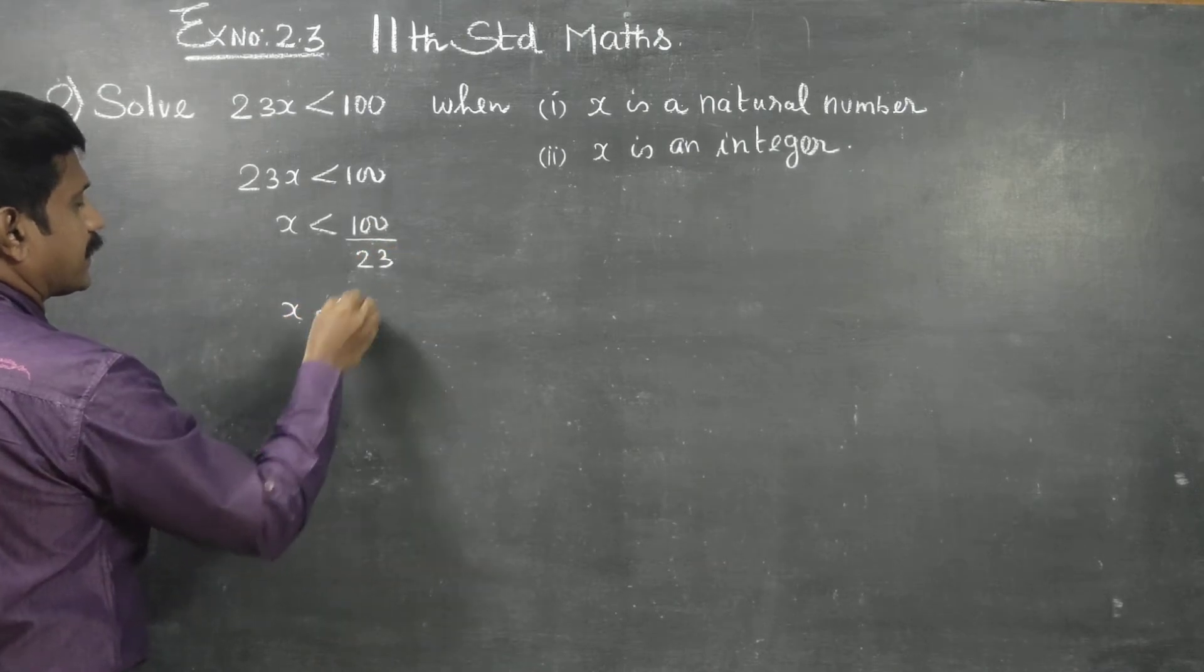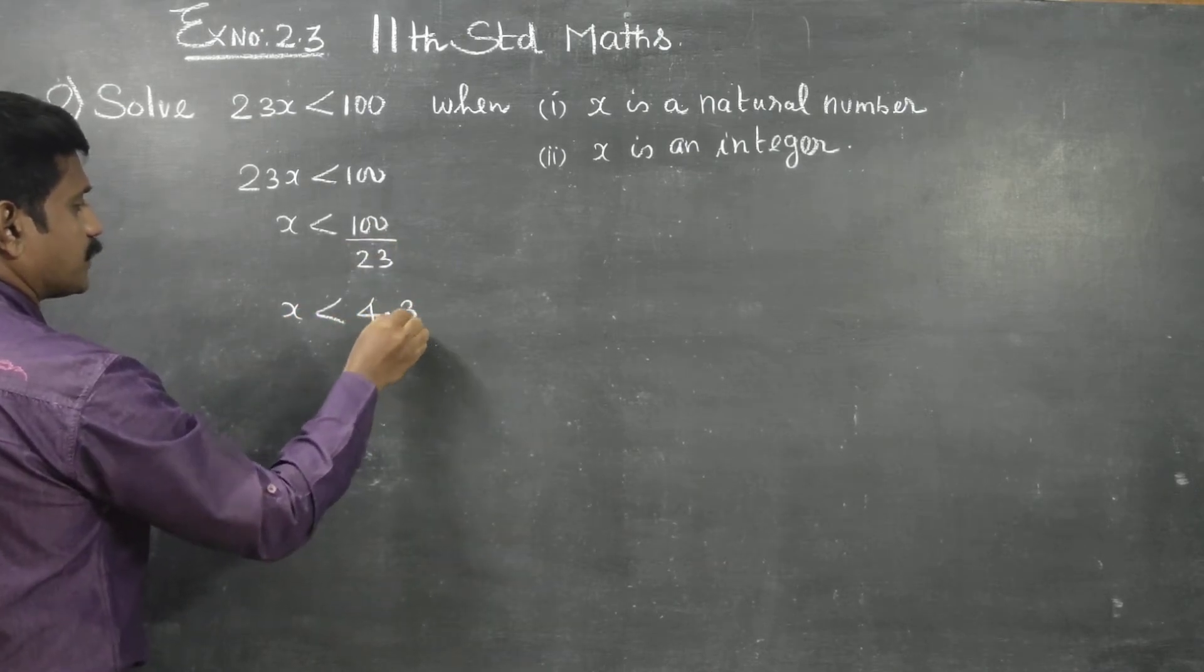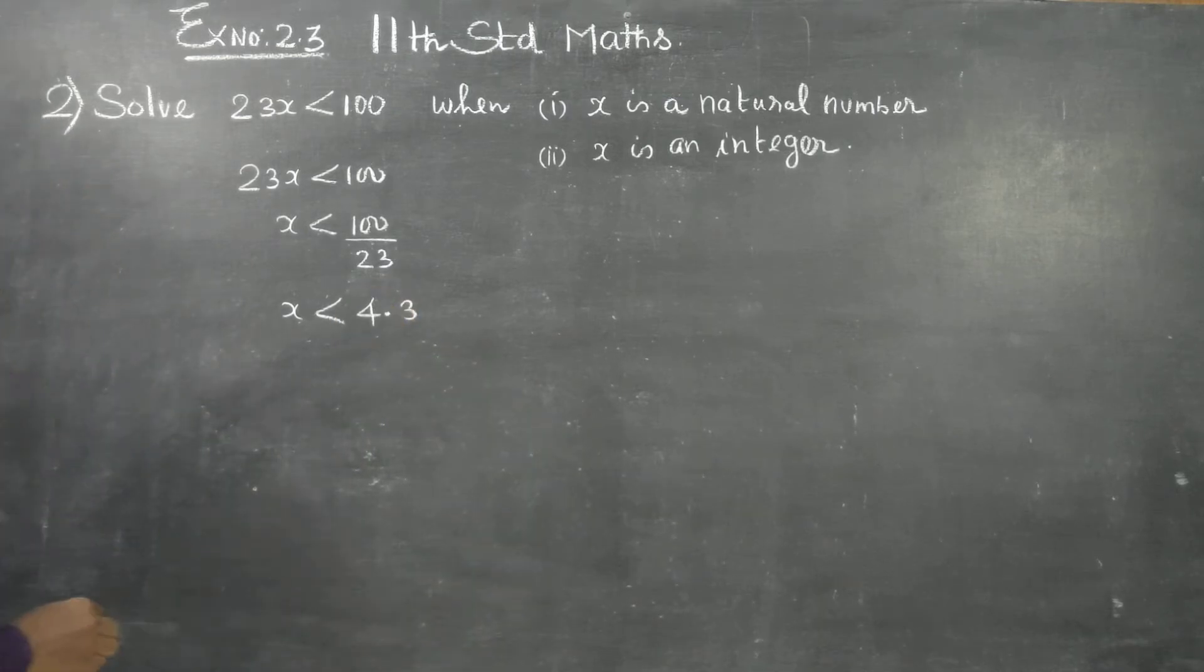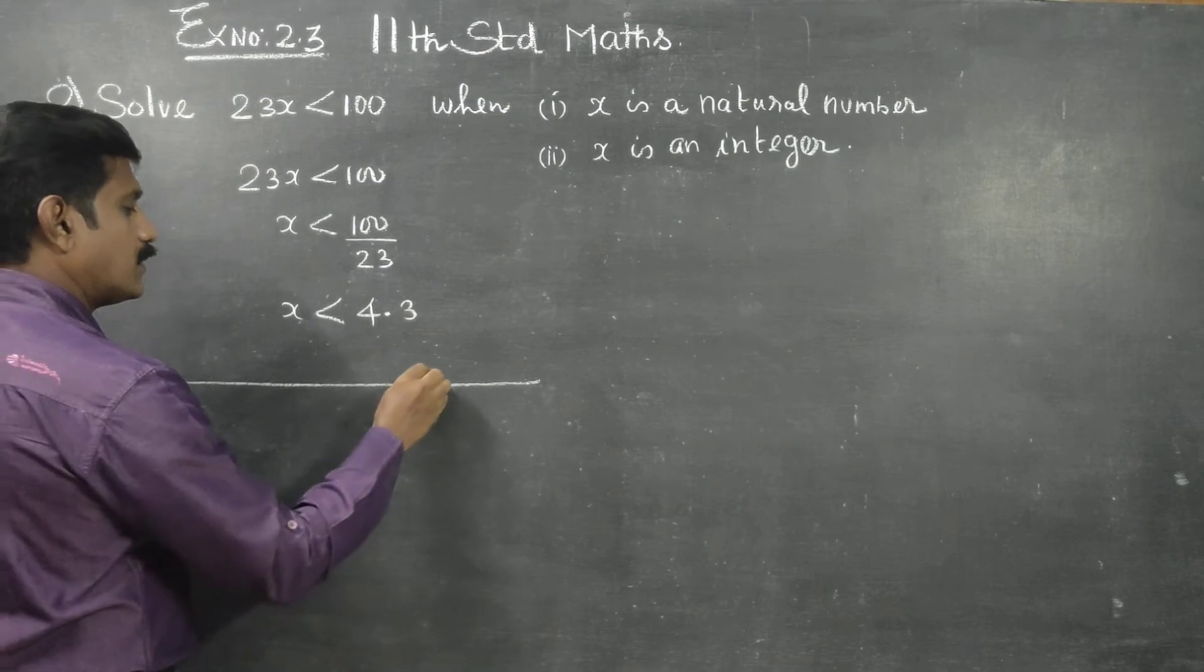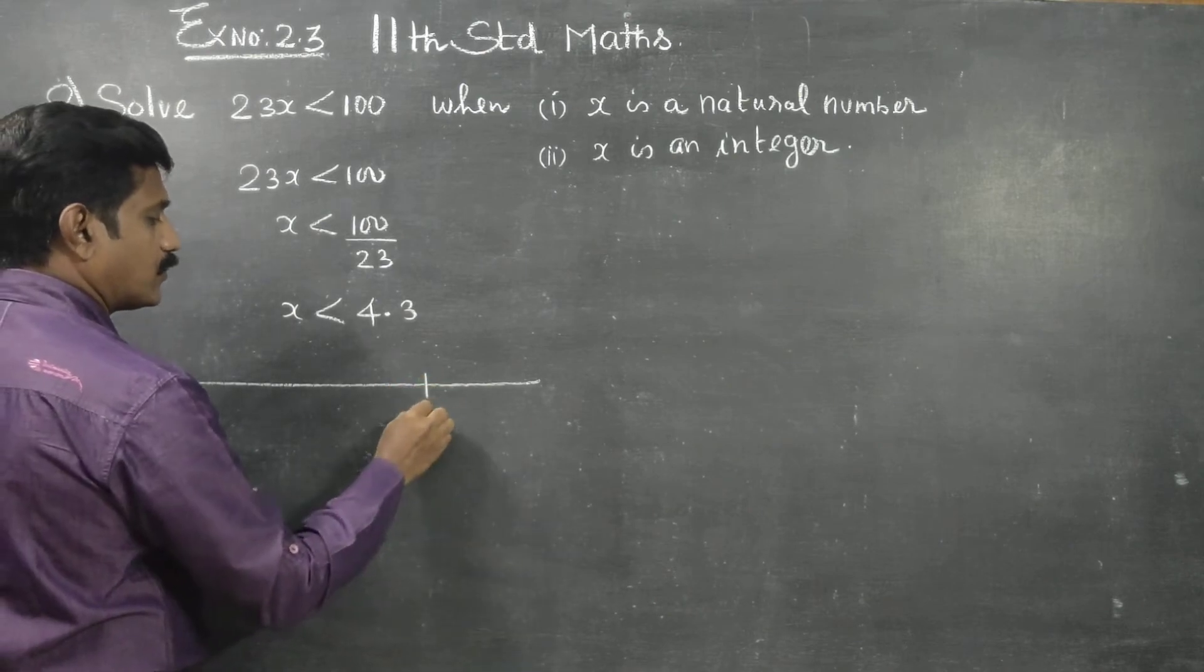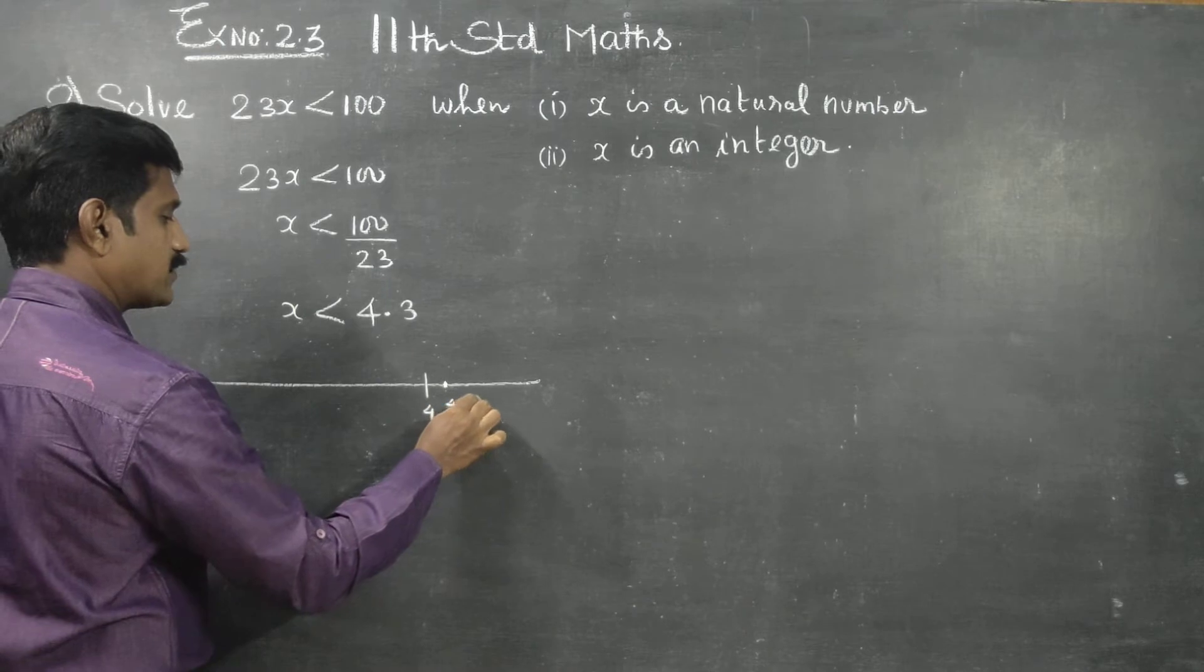If you divide 100 by 23, you will be getting approximately 4.3. If you draw a number line, let it be 4, your answer is here at 4.3.